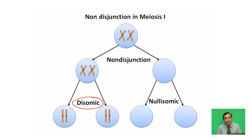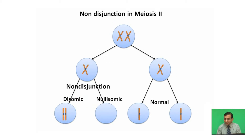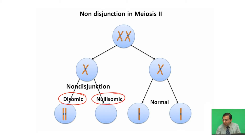There is also non-disjunction that can occur at the second meiotic division. If non-disjunction occurs at the second meiotic division, it is less severe than non-disjunction at the first meiotic division. In this case, one disomic gamete and one nullisomic gamete are formed, while two normal gametes are also formed. The disomic gamete results in trisomy when fertilized.